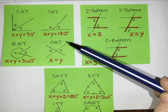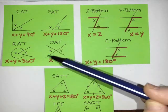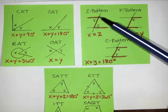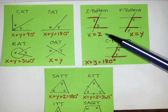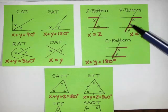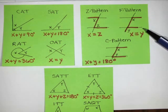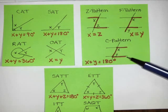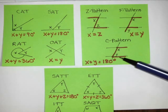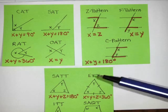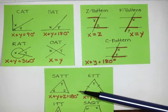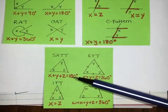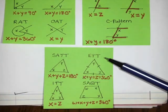We have the opposite angle theorem, which says the angles on opposite sides of two straight crossing lines are equal. We have the Z pattern in parallel lines where those angles are equal, the F pattern in parallel lines where those angles are equal, and the C pattern in parallel lines where those angles add to 180 degrees. We also have the sum of the angles in a triangle theorem, otherwise known as SATT — angles in a triangle add to 180.